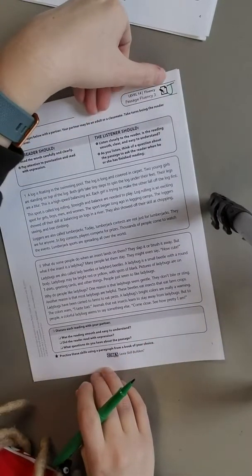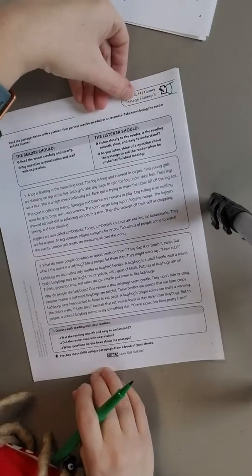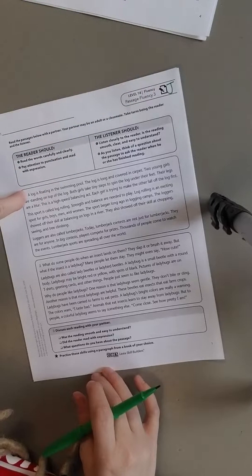Hello scholars, this is level 14, sheet J. It should say fluency, passage fluency 3, and it should start with a log.